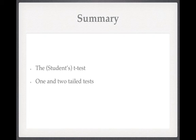In summary, we've had an introduction to the student's T test. There are different types of student's T test and we've covered one type here. We now have a way to do hypothesis testing where we don't know the population standard deviation. We've also had a quick run through the difference between a one and a two-sided, or tailed, test.